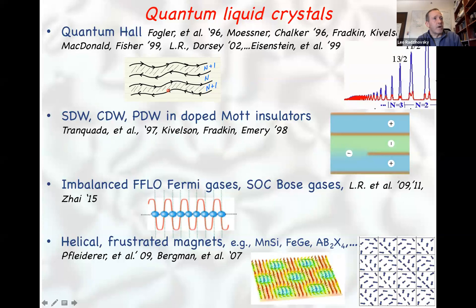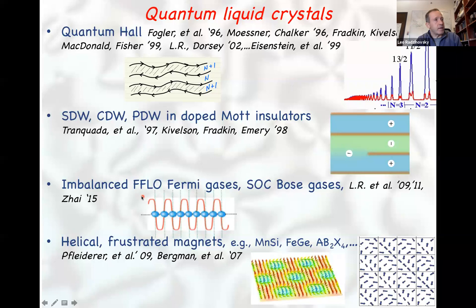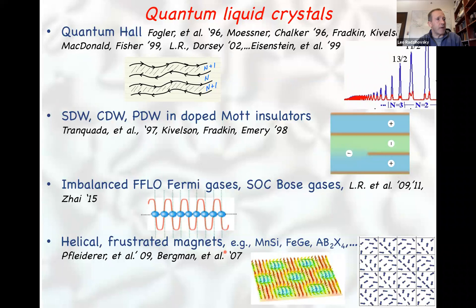Other examples where smectic and stripe-like order occur include doped Mott insulators, spin density waves, charge density waves, pair density waves, and stripe patterns. I have also studied these in spin-orbit coupled Bose gases and imbalanced Fermi gases interacting via Feshbach resonances, as a natural playground for the FFLO state. Frustrated magnets with helical-like structures also fall in this class. The key point is that the ordering wavelength is far longer than the underlying crystalline lattice, so quantum fluctuations are not suppressed by pinning to the crystal.